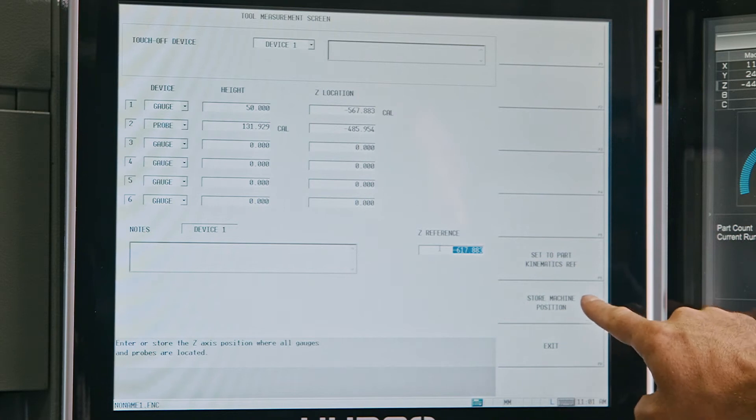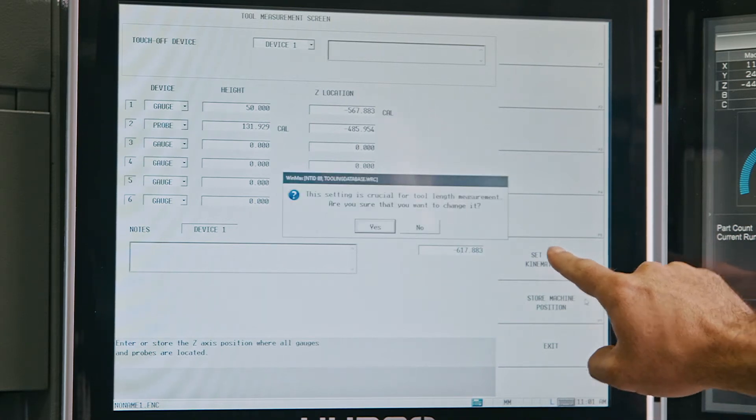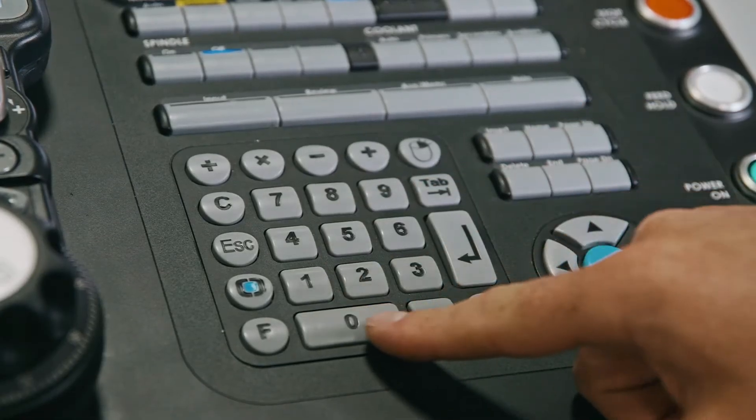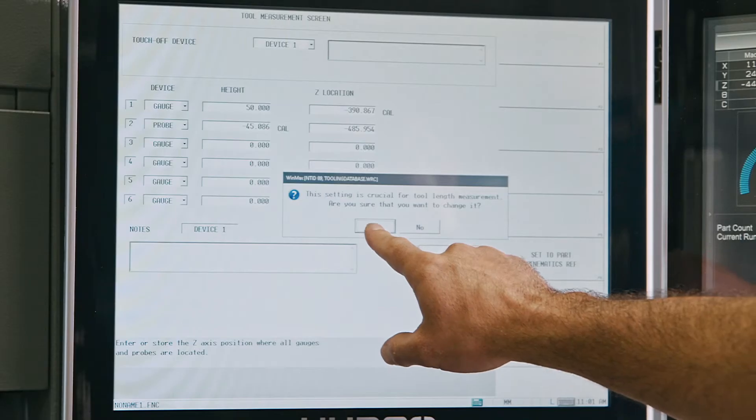Now select the Z reference field and touch store machine position, then press yes to store the value. We will need to subtract the length of the toolsetter and press yes to accept the change.